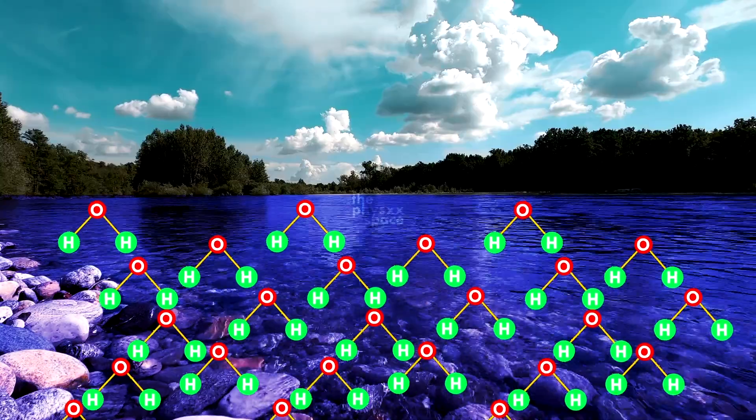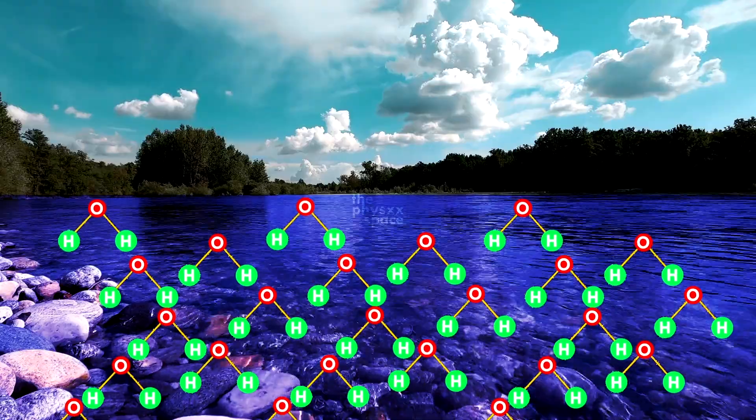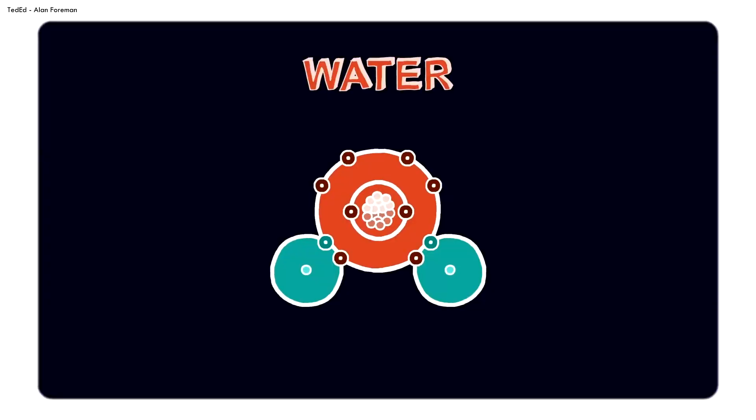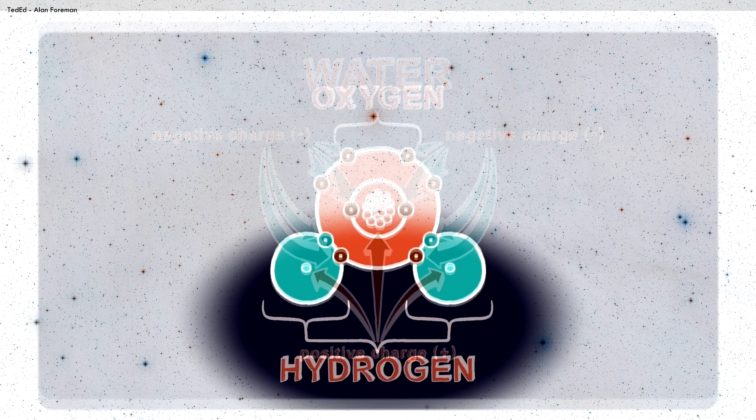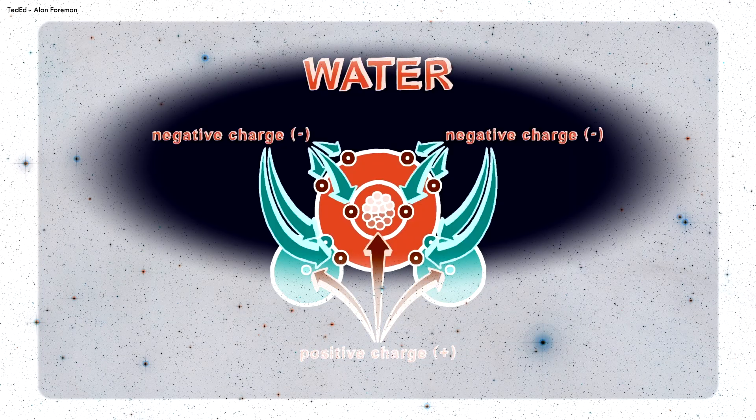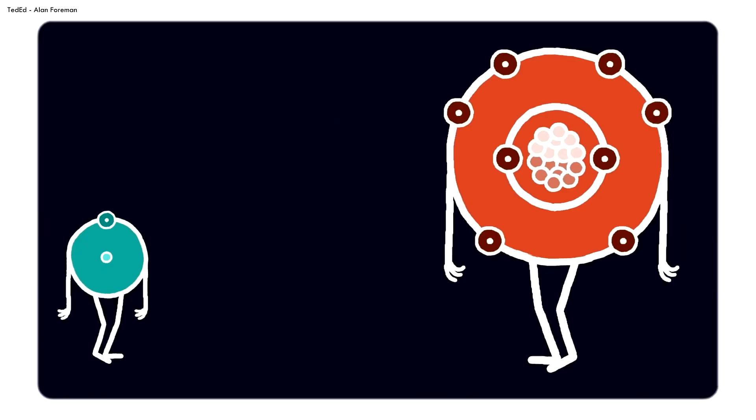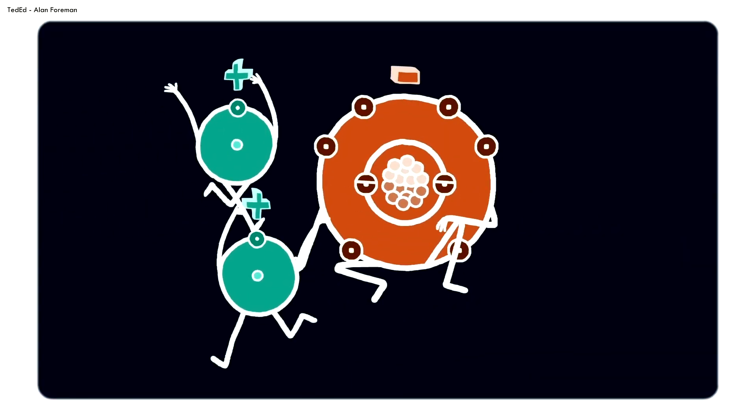The key to understanding the photomolecular effect lies in the unique properties of water molecules and their interaction with light at the air-water interface. Water molecules have a permanent electric dipole moment, meaning they have a slightly positive charge on one side, the hydrogen atoms, and a slightly negative charge on the other side, the oxygen atom. This polarity allows water molecules to form hydrogen bonds with each other, creating clusters of water molecules at the surface.